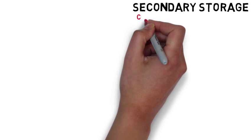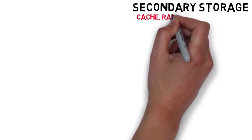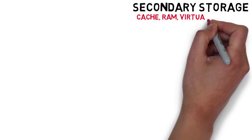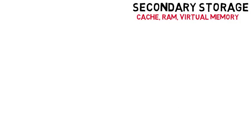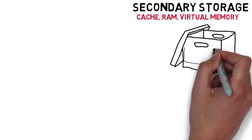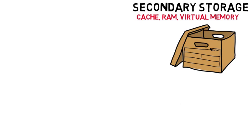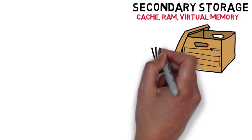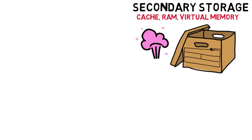Secondary storage. We've already talked about the cache, RAM, and virtual memory being temporary or volatile storage for data during any given task. Once you switch off, all that volatile memory disappears, as does the data, unless you save it.